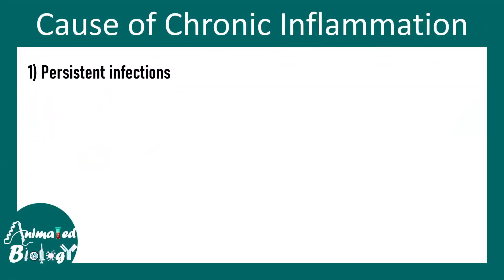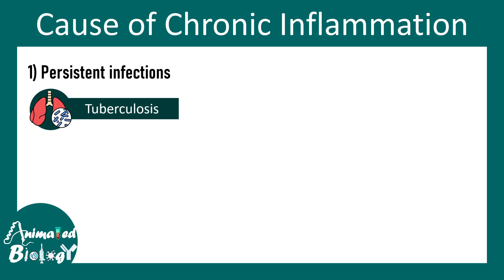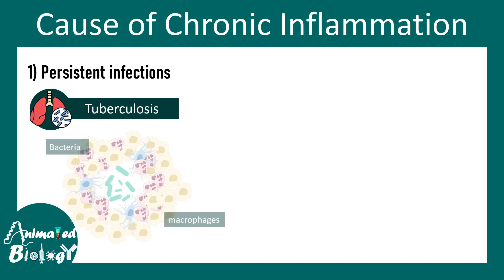So what are the causes of chronic inflammation? One of the biggest causes is persistent infection, like a persistent tuberculosis infection, which is a granulomatous infection as well.